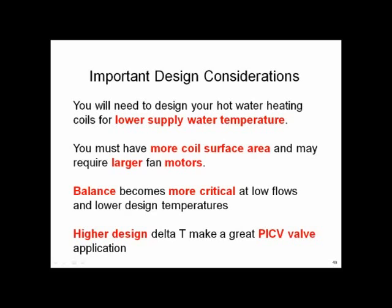The next comment is balance. If I go from a standard 20 degree delta T design to a 40 degree delta T — which I'd strongly recommend — I just cut my GPM in half. Q equals GPM times 500 times delta T. If I keep the Q (BTUs) the same and double the delta T, my GPM goes to 50%. A heating coil previously designed for 2 GPM is now designed for 1 GPM — so balancing becomes more critical. Last, we want to control delta T's — we want a high delta T and cold return water. Pressure independent control valves might be a good place to start to make sure we're getting those higher design delta T's.